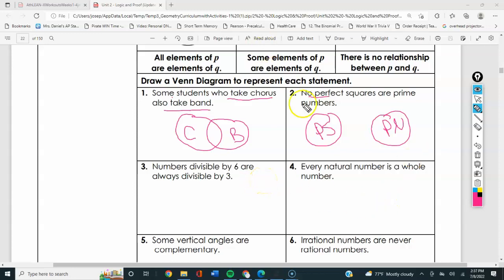Now what about this one? Numbers divisible by 6 are always divisible by 3. So all numbers that you can divide by 6 are in the group being divided by 3. If you see that every, it means it's probably going to be a circle in a circle. If you see some, they're going to be overlapping. If you see no, they don't overlap at all.